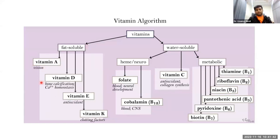Vitamin A deficiency can cause vision disturbances and night blindness. Vitamin D is very important for bone calcification and calcium homeostasis — it regulates the amount of calcium and other ions in the body so that bones have adequate calcium to remain strong.